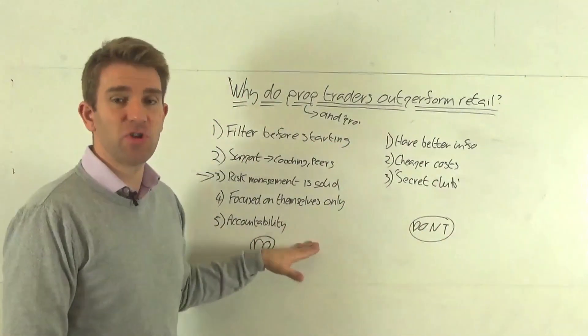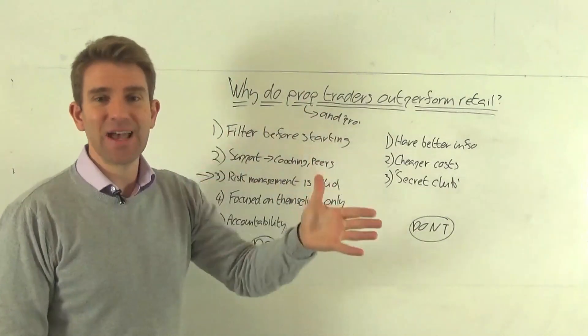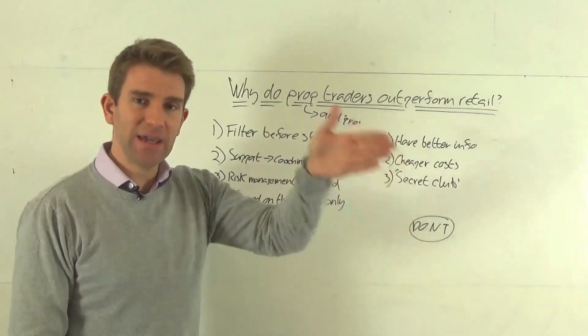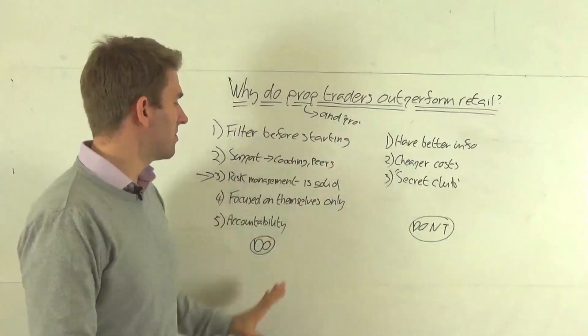There's no structure there. Whereas accountability and structure that you get in a prop environment, or in a pro environment is exactly that. You're trading this market, these markets, this strategy between these hours, these are your risk parameters. Off you go. So that's some of the reasons.